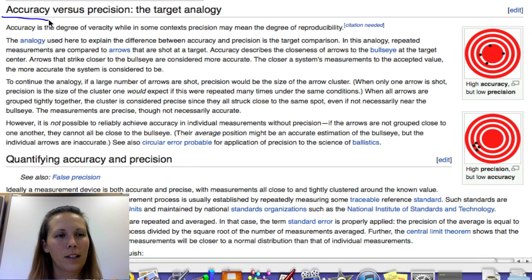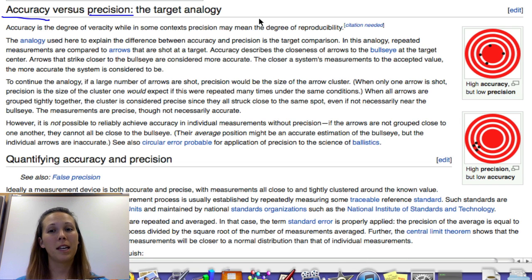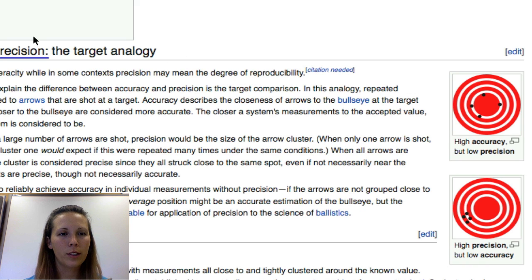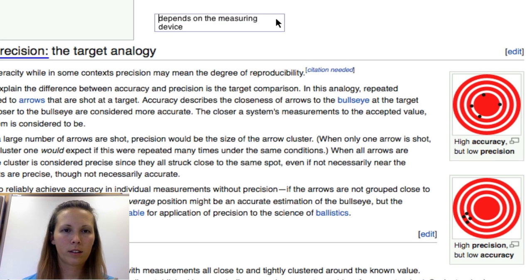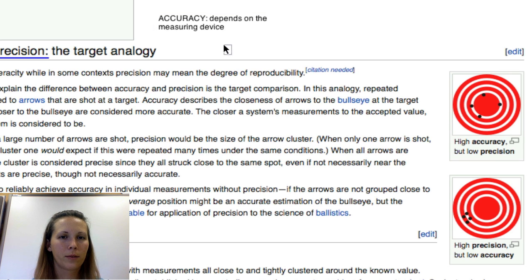So part two in this lecture is going to be a little bit about accuracy and precision. Here we have a little bit of Wikipedia action for you guys. It was the easiest way for me to find these little target demonstrations. So accuracy, which I will type out the definition for you guys, so you can have my definition. It depends on the measuring device. Accuracy depends on the measuring device.